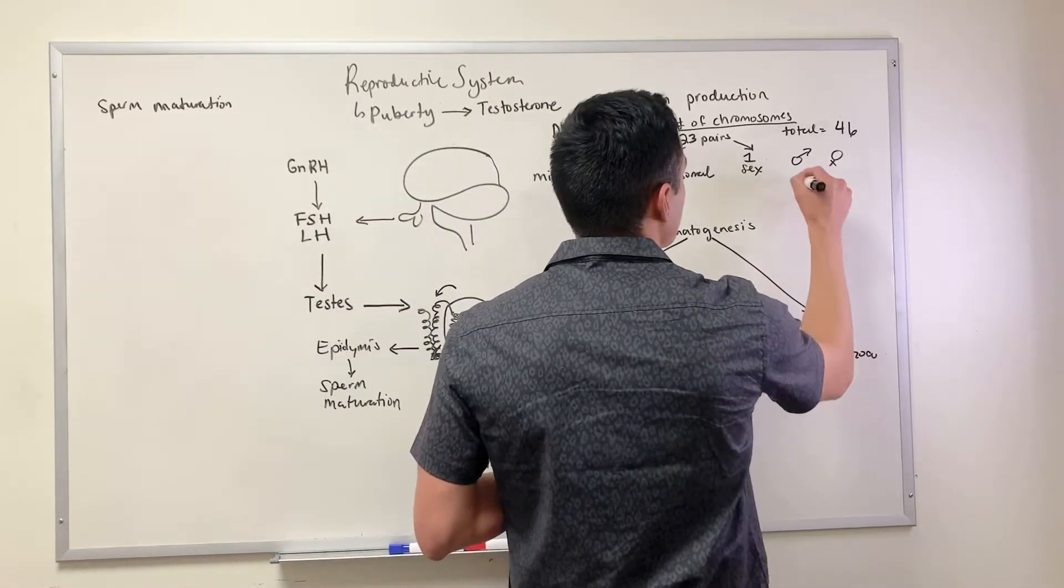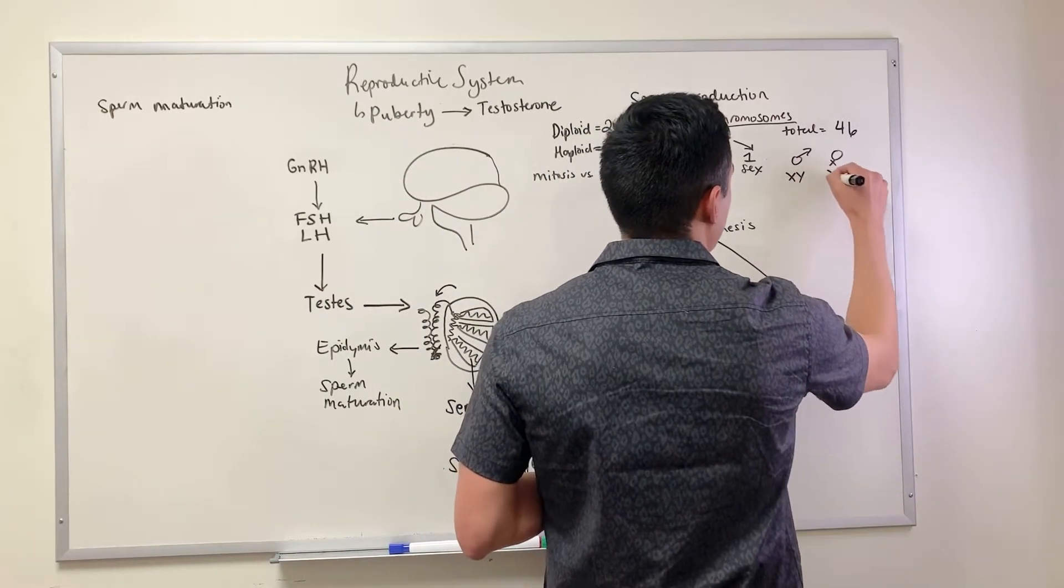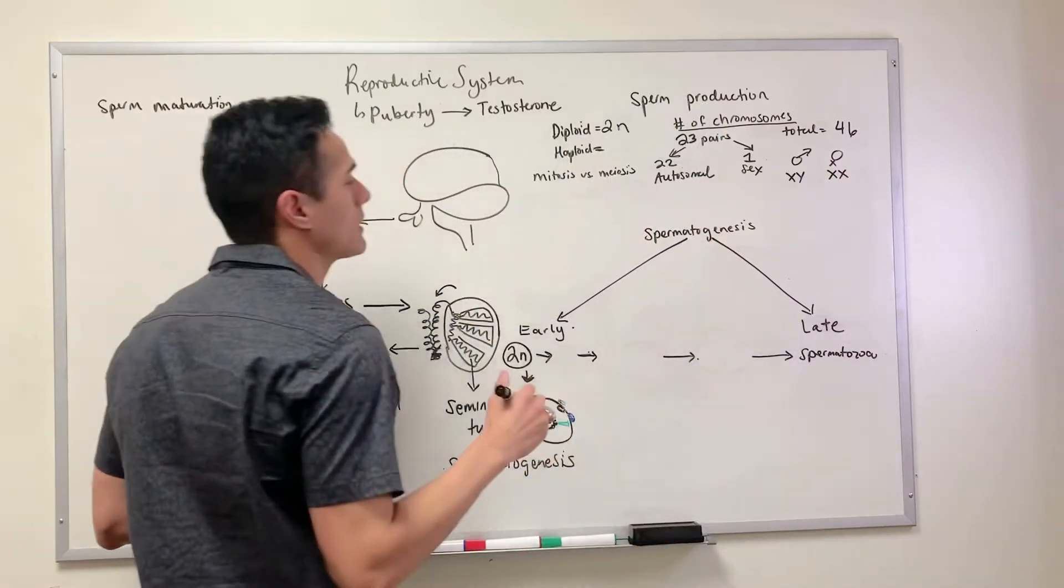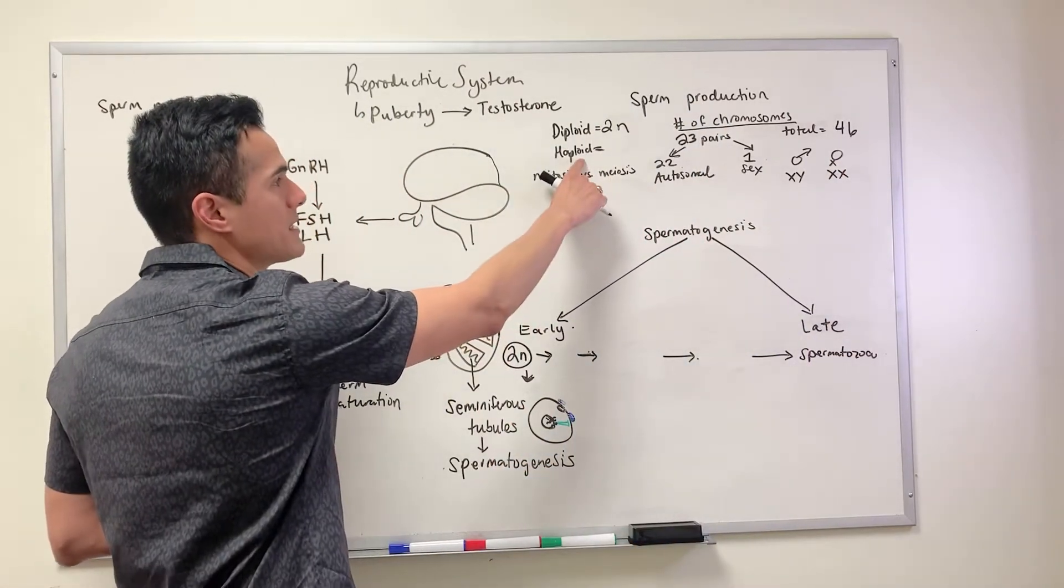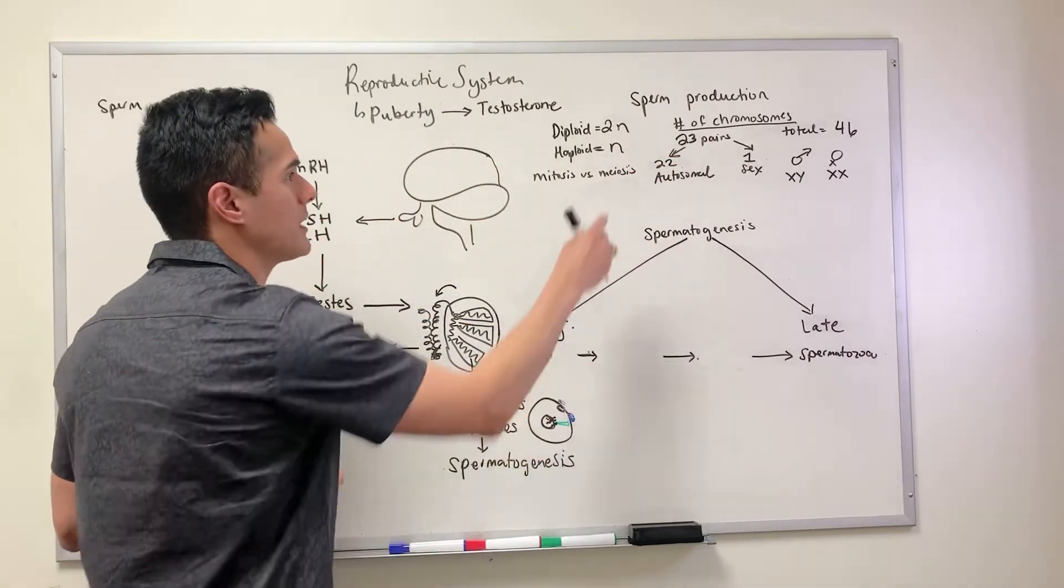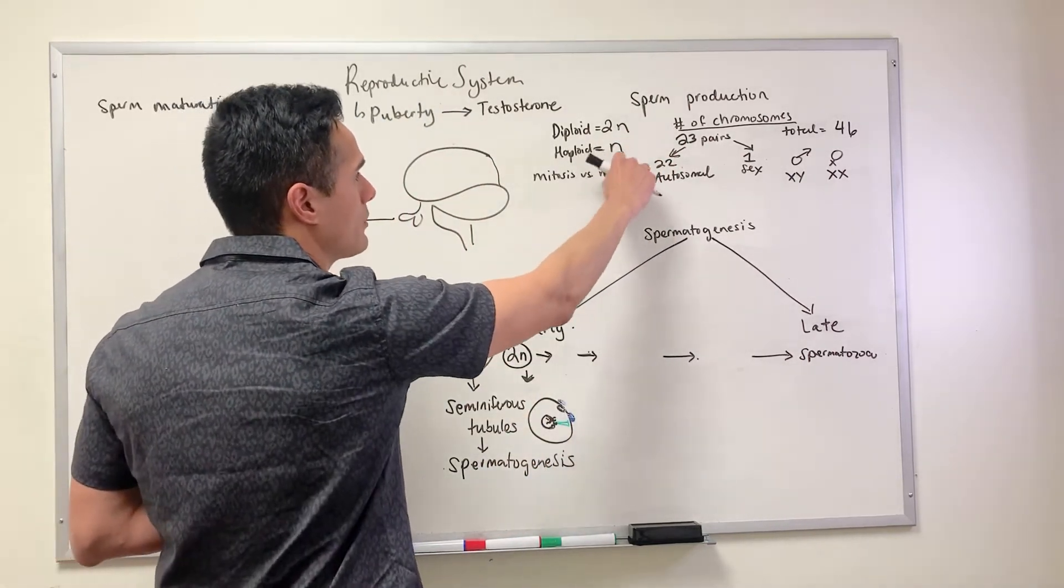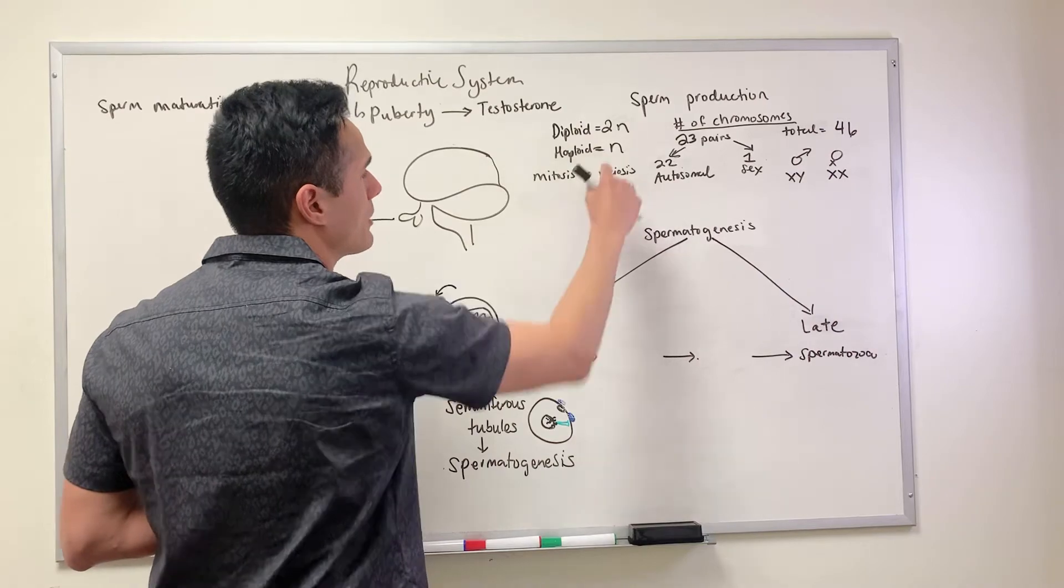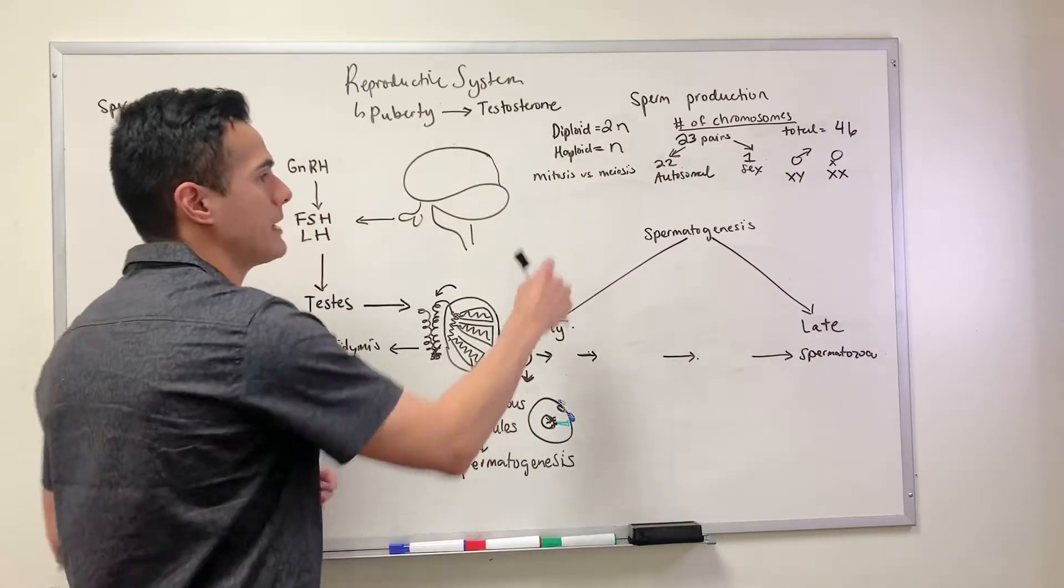With males they have an XY and with females they have two X's. What represents a haploid cell is just n, because we're going to have only 23 chromosomes.